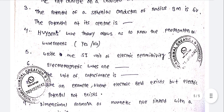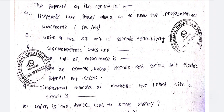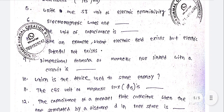Huygens' wave theory allows us to know the propagation of wave fronts — yes or no? Write the SI unit of electric permittivity. Electromagnetic waves are dash. The unit of capacitance is dash. Give an example where electric field exists but electric potential does not exist.